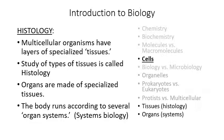Histology — remember that '-logy' suffix — refers to the study of tissues. If you put together a bunch of cells that all have the same function, you form a tissue. Multicellular organisms have layers of specialized tissues, and the study of those is called histology — a subdiscipline of biology. Organs are made of specialized tissues: the liver, kidneys, and so on. If you take all of the organs that carry out a certain specific function, you have something called an organ system.